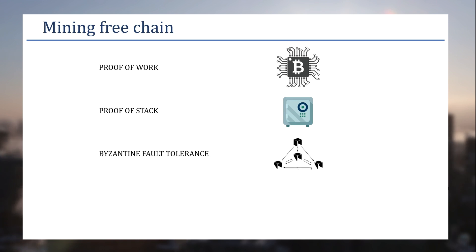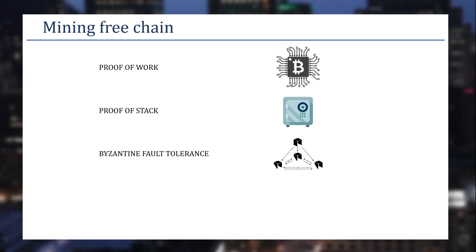The next consensus is Byzantine Fault Tolerance, well known as BFT, where multiple parties can validate the next block and come to a consensus. However, in BFT, all validators are approved by one central party, which gives it a more centralized scenario — not decentralized like Proof of Work or Proof of Stake. BFT algorithms are mostly used in private blockchains.